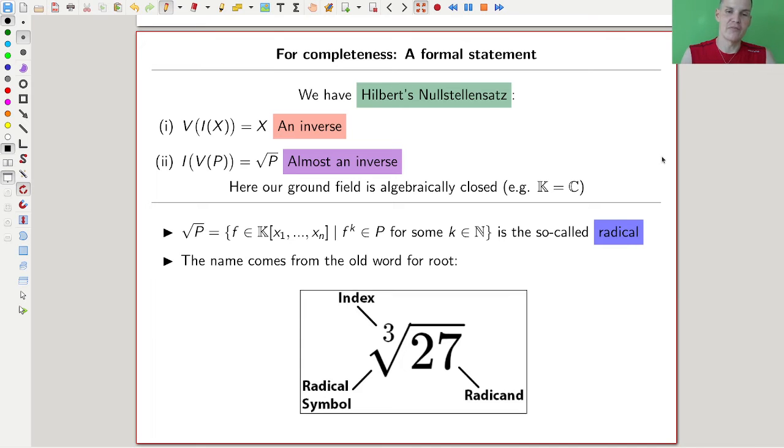Which in practice mostly means you want to work with something like the complex numbers. The real numbers are not real. Who believes in square root of two anyway? You might argue that the complex numbers are not real. Who believes in i? Fair enough.